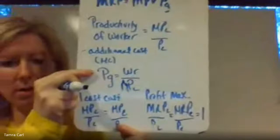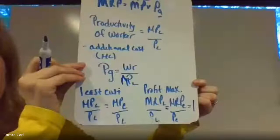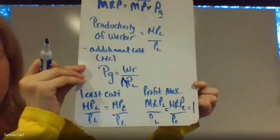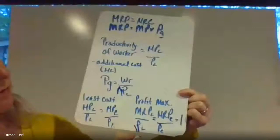These to me are like plug-and-chugs. You've got your least-cost rule: the marginal product of labor over the price of labor equals the marginal product of capital over the price of capital. Then you've got your profit-maximizing rule: the MRP of labor over the price of labor equals the MRP of capital over the price of capital, and that equals one. Got to remember the one — that's where they get you.